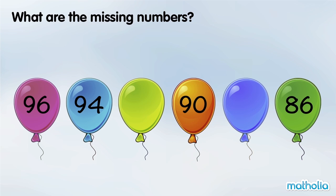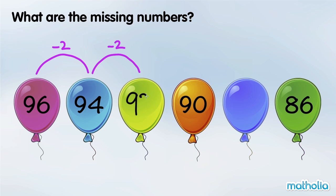What are the missing numbers? 96 minus 2 is 94. In each step the numbers go down by 2. 94 minus 2 is 92. 90 minus 2 is 88. The missing numbers are 92 and 88.